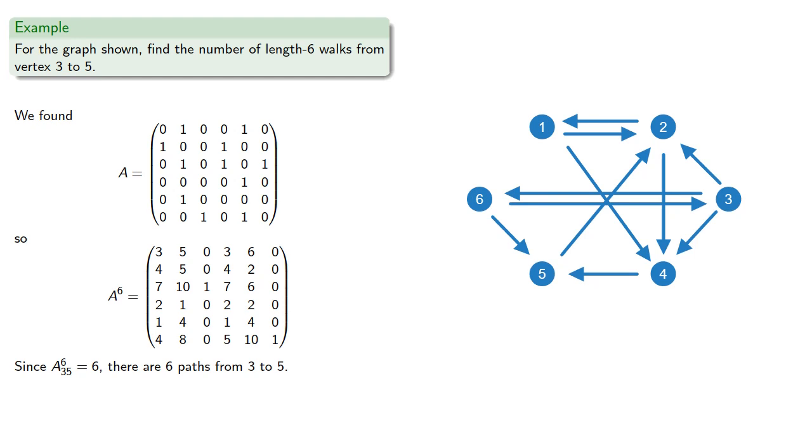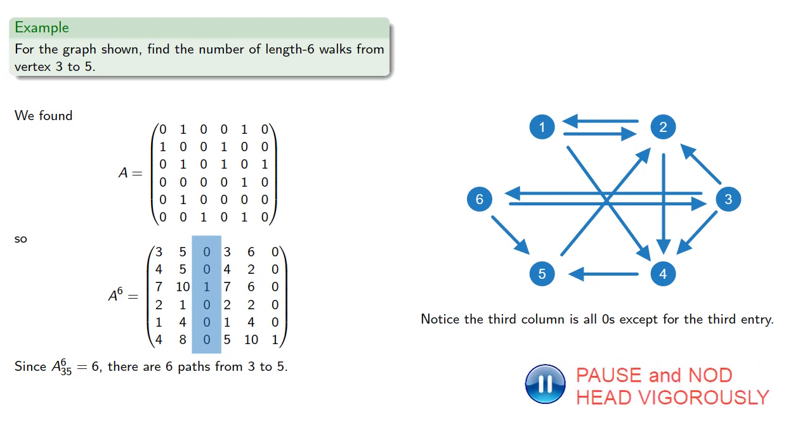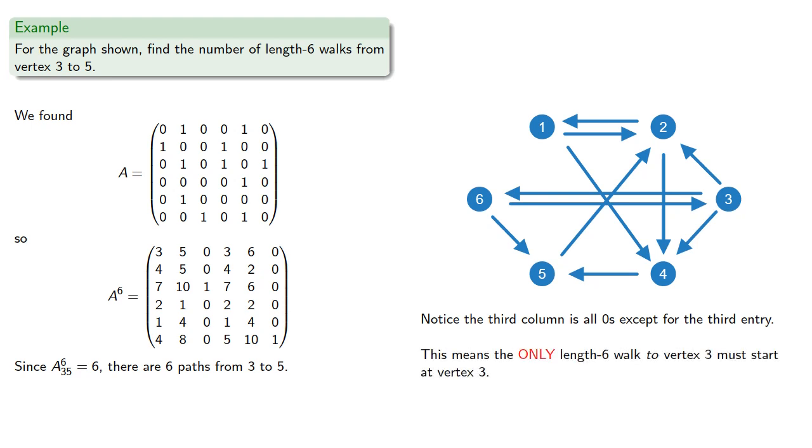An important idea in math and in life: answer the next question. In particular, we might notice the 3rd column is all 0s except for the 3rd entry. This means the only length 6 walk to vertex 3 must start at vertex 3.